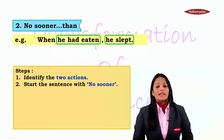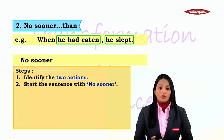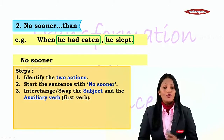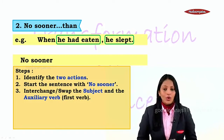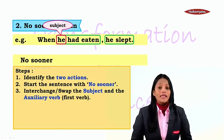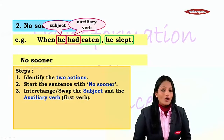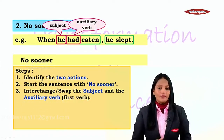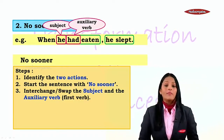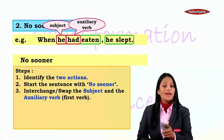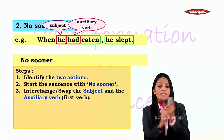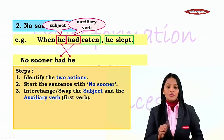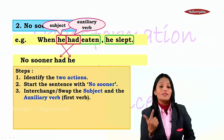First, identify the two actions: 'he had eaten' and 'he slept.' Next, start the sentence with 'no sooner' — your answer starts with 'no sooner.' Then interchange or swap the subject and the auxiliary verb. Here, 'he' is the subject and 'had' is the auxiliary verb — the helping verb which comes before the main verb. 'Eaten' is the main verb and 'had' is the auxiliary. So instead of 'he had,' it becomes 'had he.' Start with 'no sooner,' swap the subject and auxiliary.